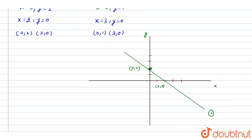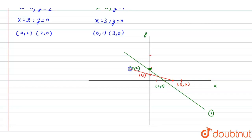Next, we plot the points (0, 1) and (3, 0). We draw a line passing through these two points. This is the line for equation 2.